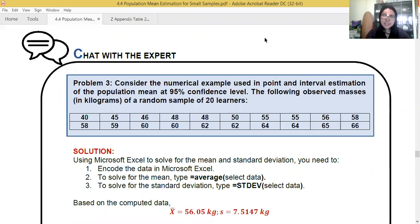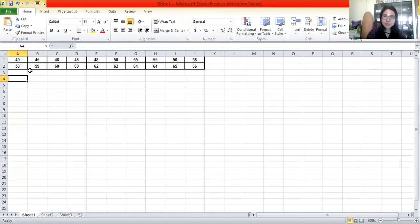consider the numerical example used in point and interval estimation of the population mean at 95% confidence level. The following observed masses in kilograms of a random sample of 20 learners. Now, if you see, the raw data is given. So we don't have the mean and the standard deviation. So what are you going to do? You need to encode this in your Excel, Microsoft Excel. Let me share my Microsoft Excel. I just copied it. So here, I'll type each of them.